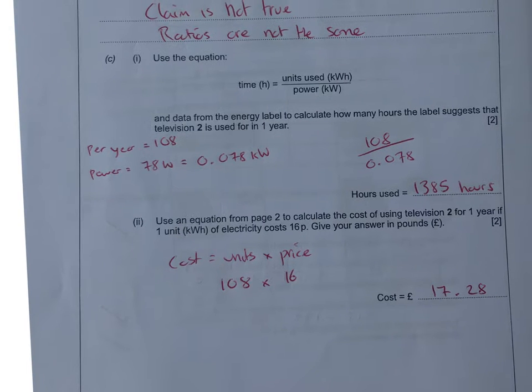Then we come to using equations now. It suggests that TV2 is useful and the data. So we're going to use this to calculate the time. The units used from TV2 was 108, and the power was 78 watts. We need to convert that to kilowatts.